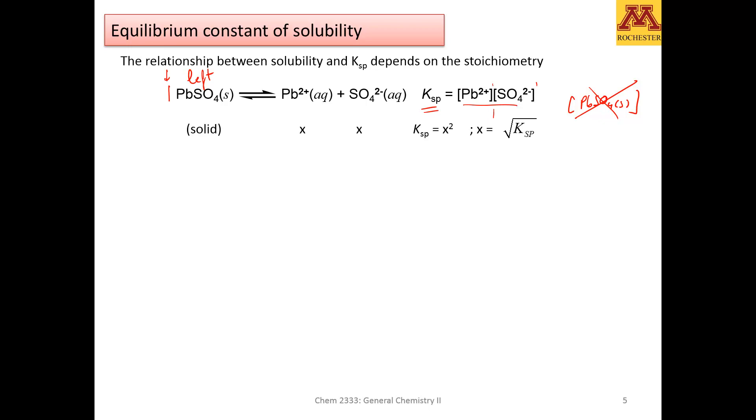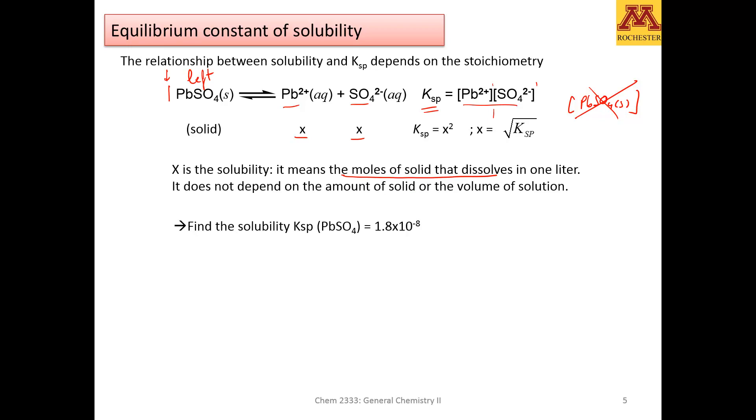Now, how can we calculate how much solid dissolves? This is what we call solubility. Solubility is this amount that tells you how many moles of solid have dissolved. Whatever that leaves the solid that is in solution, if we are being asked, what is the concentration that exists of these two ions knowing the Ksp?